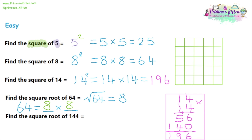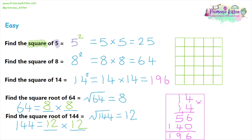Question five: the square root of 144. We are looking for two numbers which multiply together to make 144. If you're not sure, start with 10 times 10 is 100, which is smaller than 144, so try something larger. What would 11 times 11 be? That's 121 — still too small. Then try 12: 12 times 12 is 144. So the square root of 144 is 12, because two 12s multiplied together make 144.